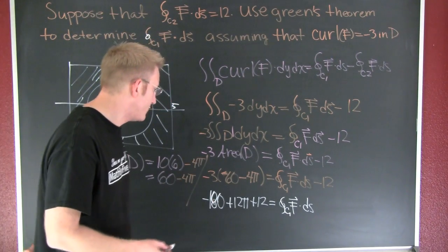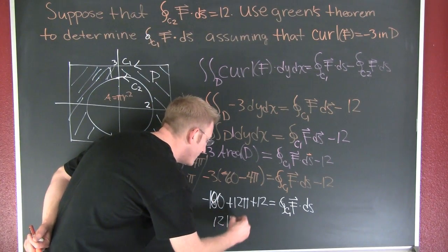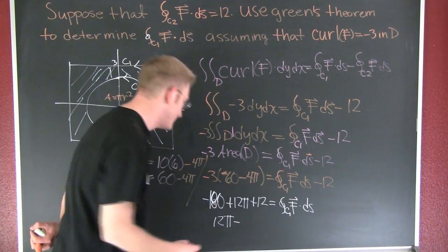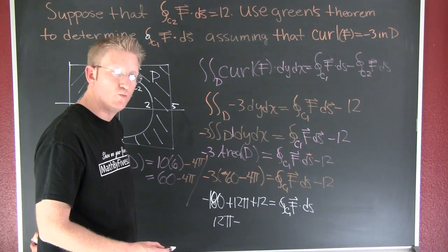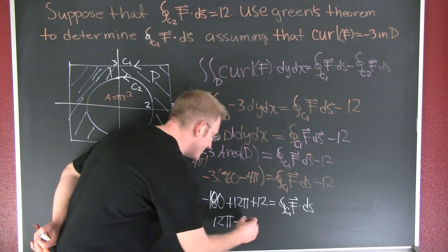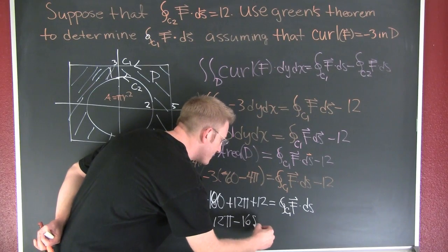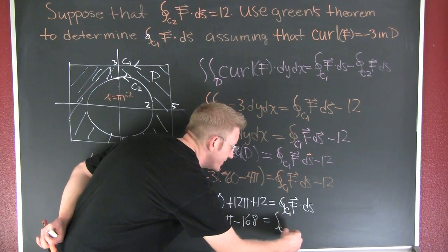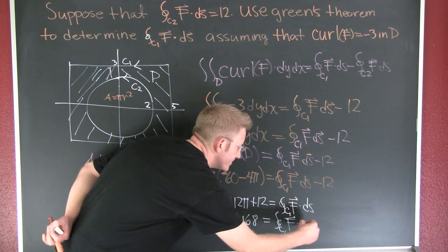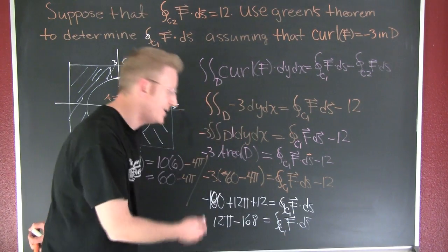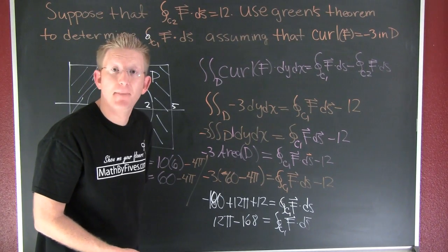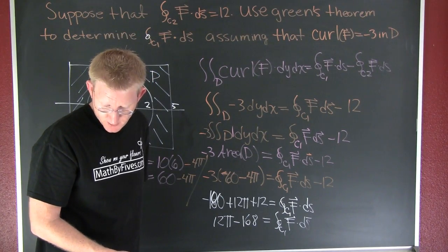Gather, collect, and combine. And then I'll have 12 pi minus 168. And that's equal to my integral here. And that's the exact value. If you want an approximation, it's going to be minus 130.3.